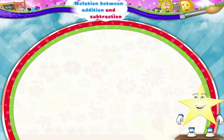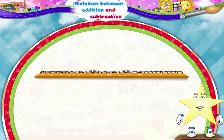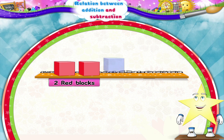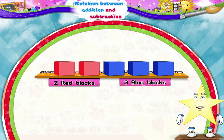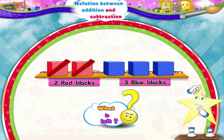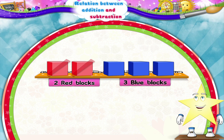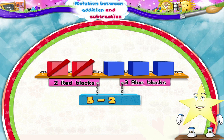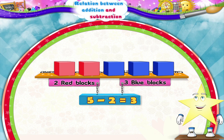Now, let me show you something interesting. Let's take our train again with two red blocks and three blue blocks. Suppose I take away the two red blocks from the train. What is left, Starry? The three blue blocks. So, five take away two equals three. Subtraction. Five minus two is equal to three.